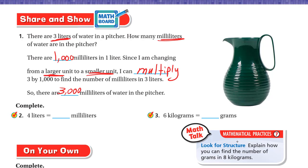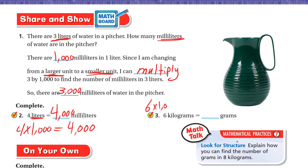Number two: 4 liters to milliliters. From liter to milliliter, multiply by 1,000. So 4 × 1,000 = 4,000 milliliters. Number three: 6 kilograms to grams. From kilograms to grams — larger to smaller unit — we multiply. So 6 × 1,000 = 6,000 grams. It's really easy: just multiply liters by 1,000 to get milliliters, and kilograms by 1,000 to get grams.